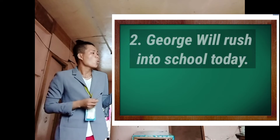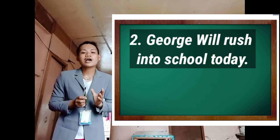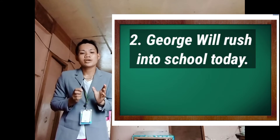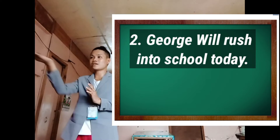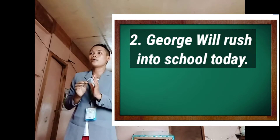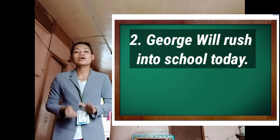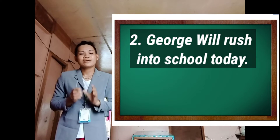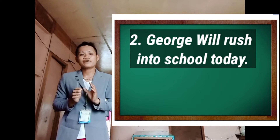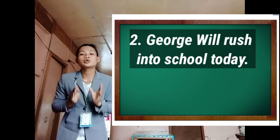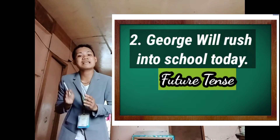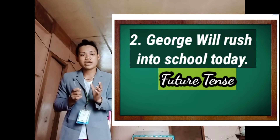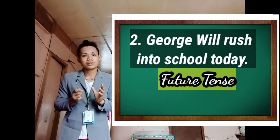Proceed to example number two: 'George will rush into school today.' What kind of verb tense is this? Please stand up, Ruby. Okay, very good. This sentence refers to the future tense because this is when an event has not taken place yet.